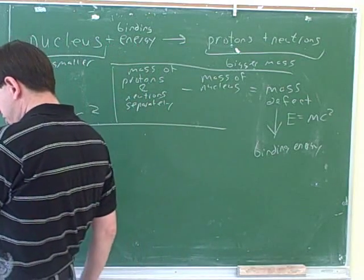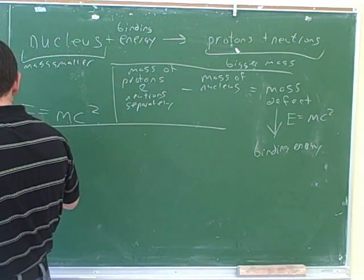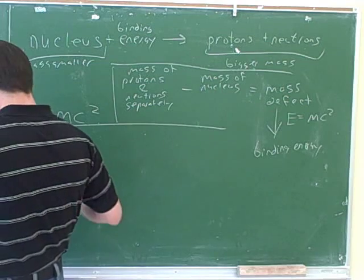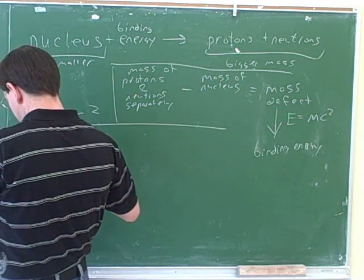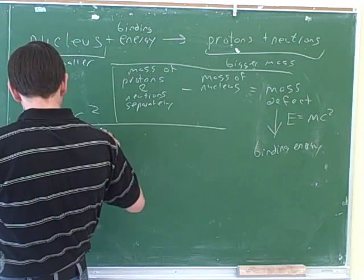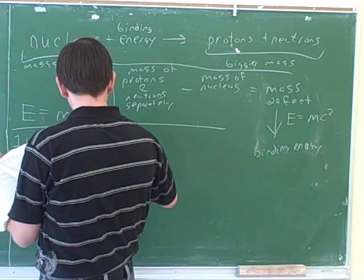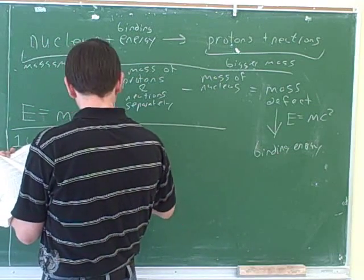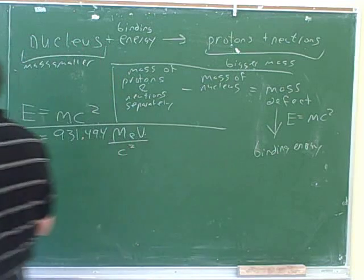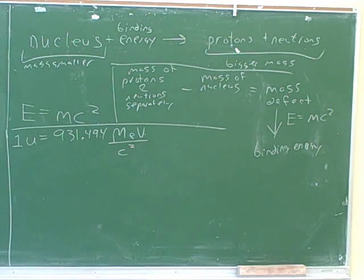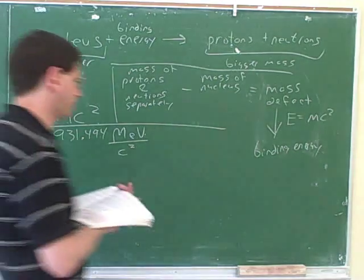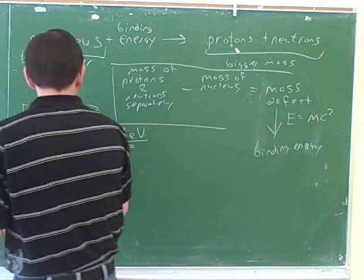Here is a conversion ratio that's going to be helpful to us. One atomic mass unit is equal to 931.494 mega electron volts per c squared. Let's call that 931.5.